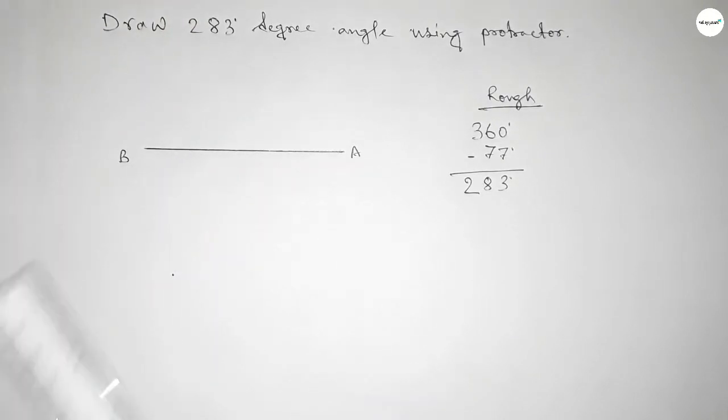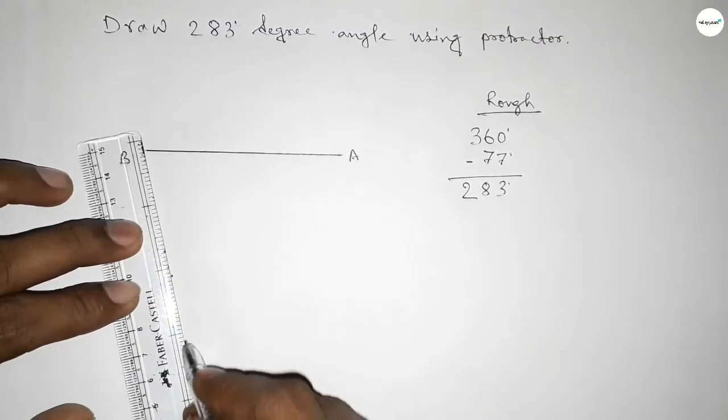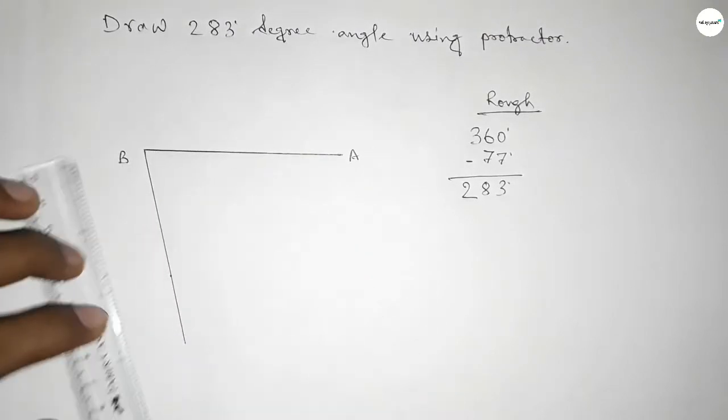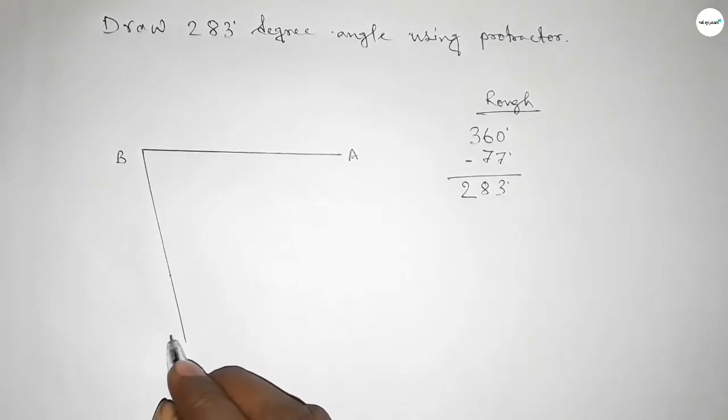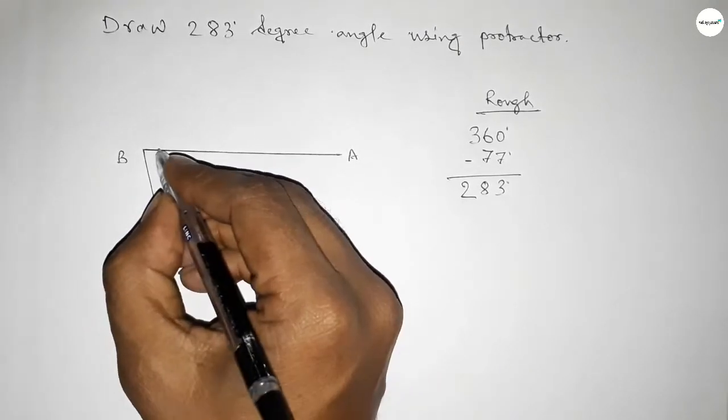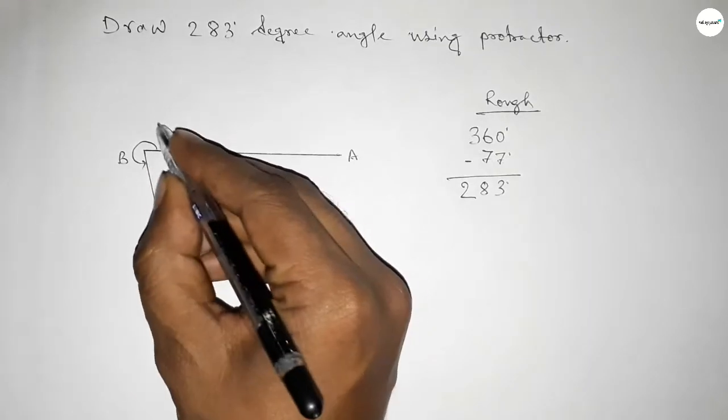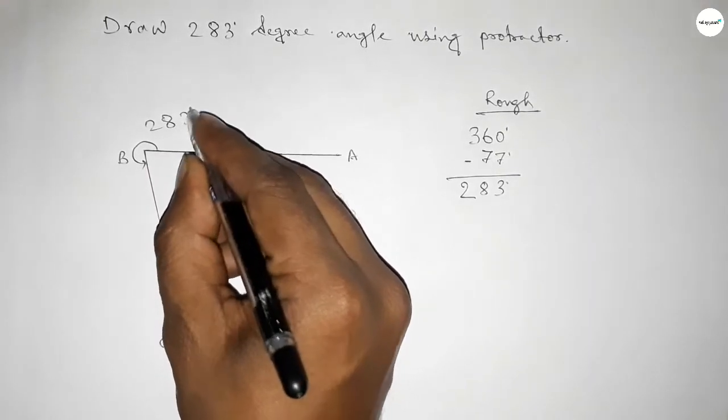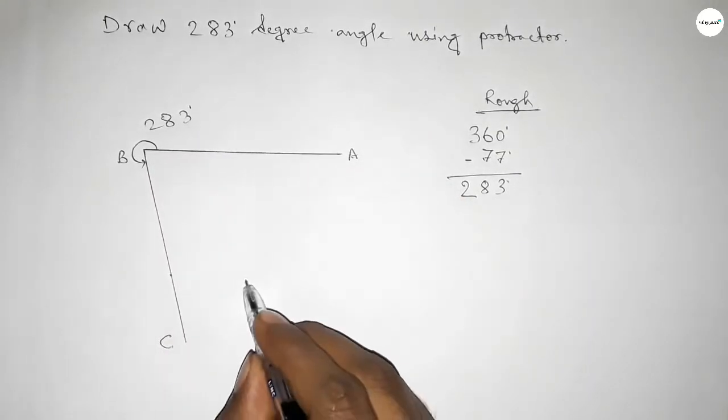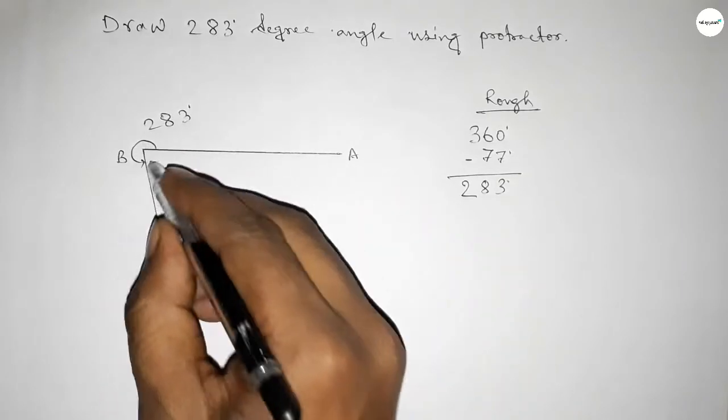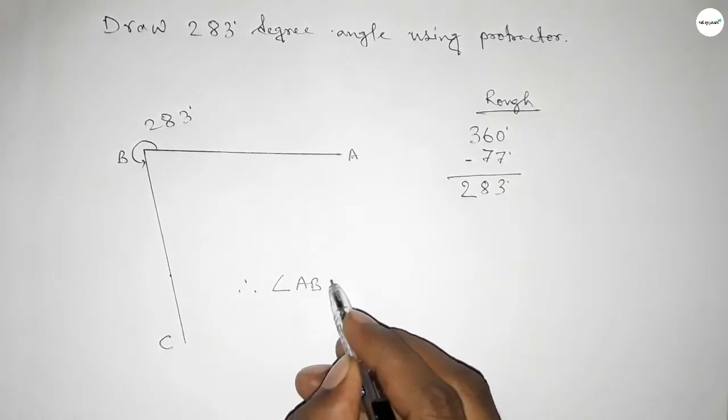Now joining this side and taking here C point. So angle ABC up to this, this is 283-degree angle. Therefore angle ABC up to this, angle ABC equals 283 degrees.